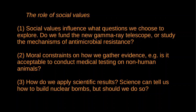There are three ways in which social values have a fairly obvious influence. First, social values influence which questions we choose to explore. Do we fund a new gamma-ray telescope, study antimicrobial resistance, or build a new anthropology department? That's a matter of social values — it depends on what we want to achieve. If we're more concerned with using science to improve human welfare, we may give preference to microbiology over gamma-ray astronomy. Antimicrobial resistance is a really big deal right now.